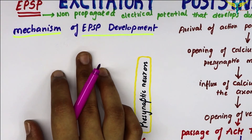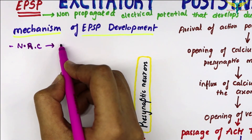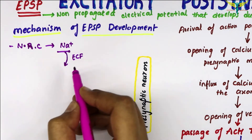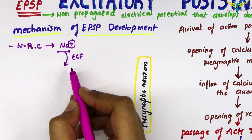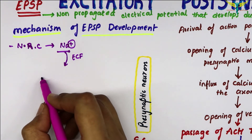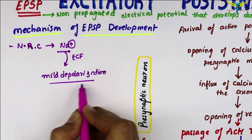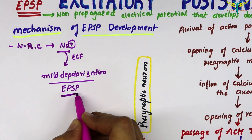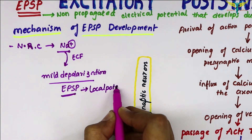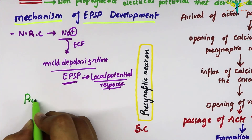The mechanism of EPSP is initiated by the neurotransmitter-receptor complex, which causes opening of the ligand-gated sodium channels. Sodium ions enter from the ECF, and because they are positively charged, the resting membrane potential inside the cell body is altered, causing mild depolarization. This mild depolarization is called the EPSP — the excitatory post-synaptic potential — and it is a local response of the synapse.